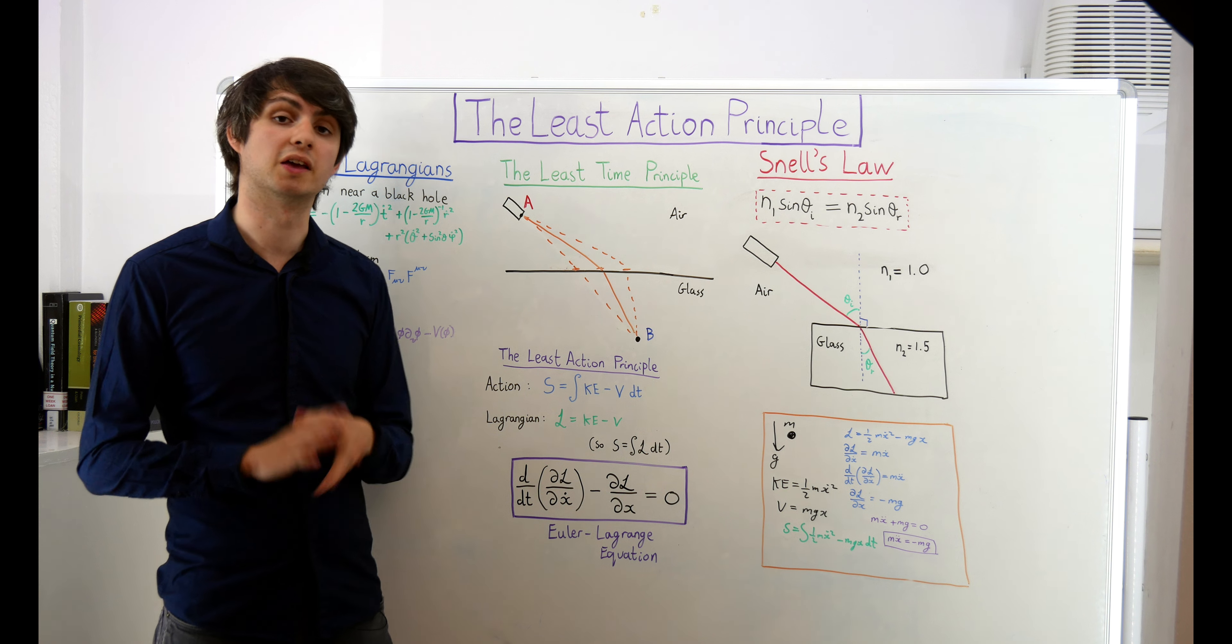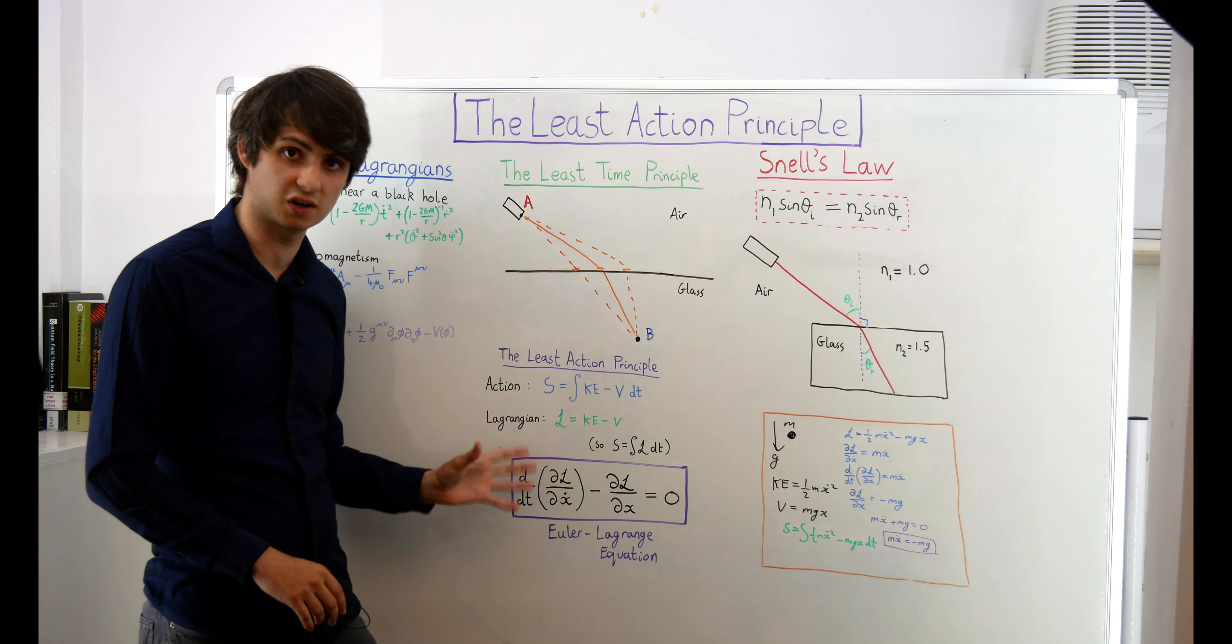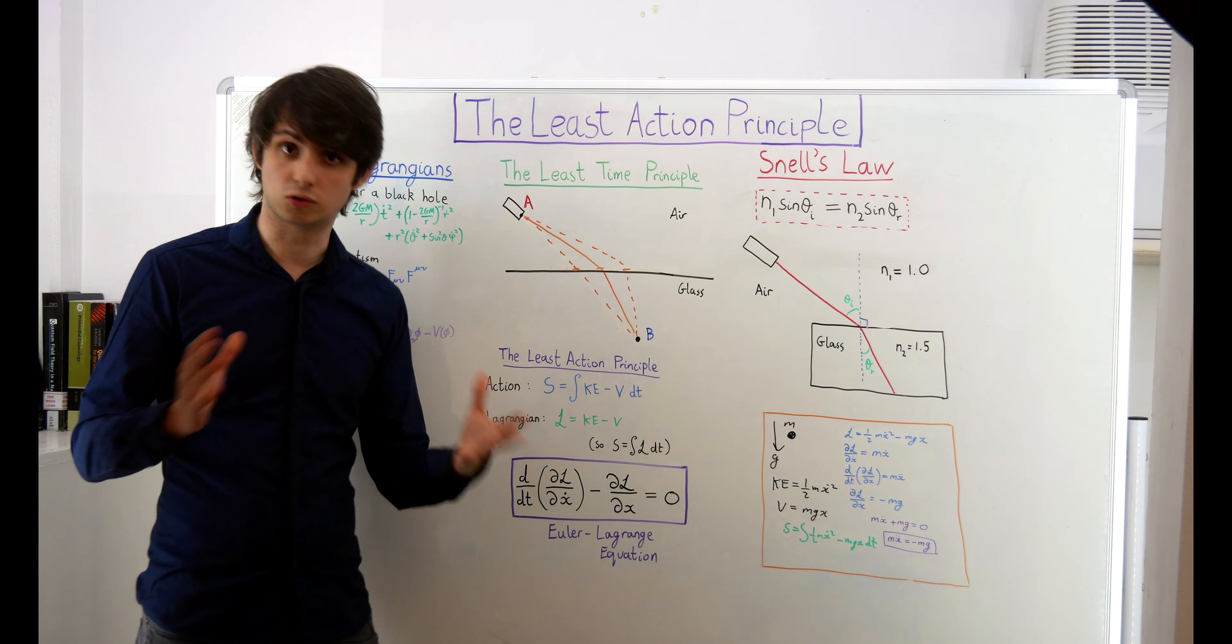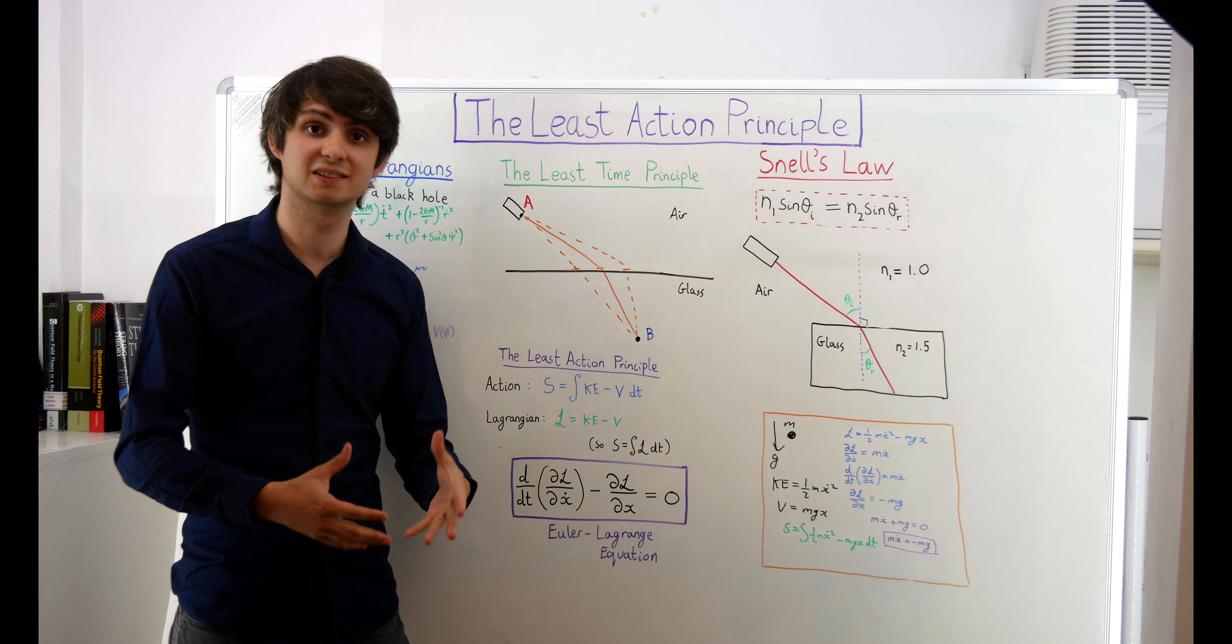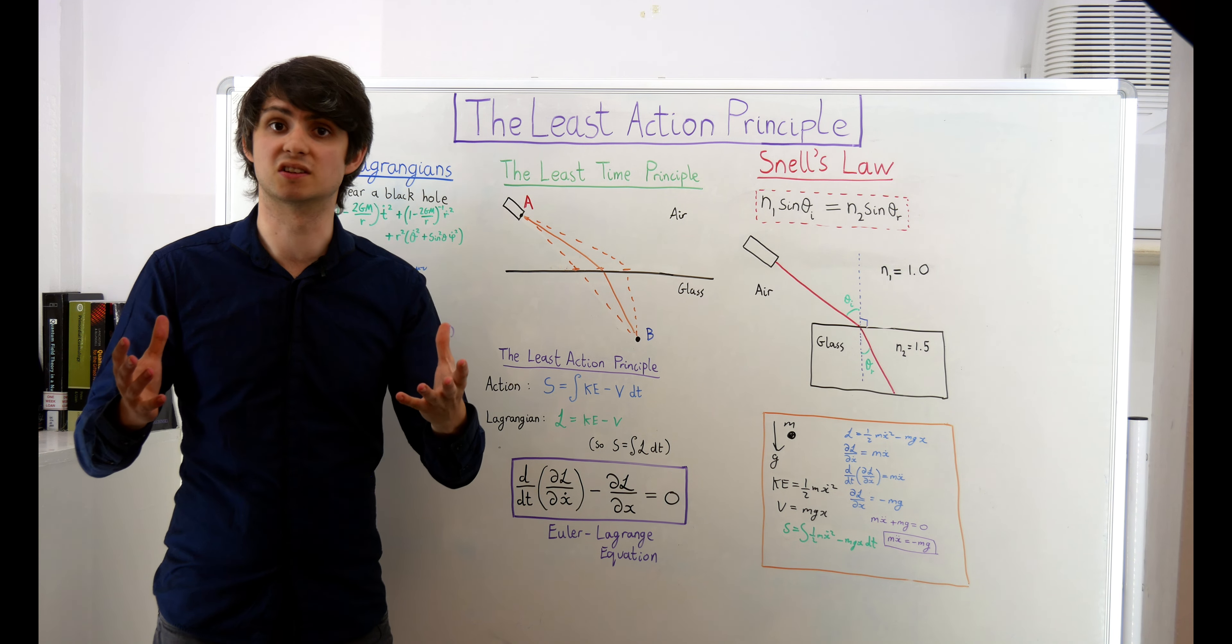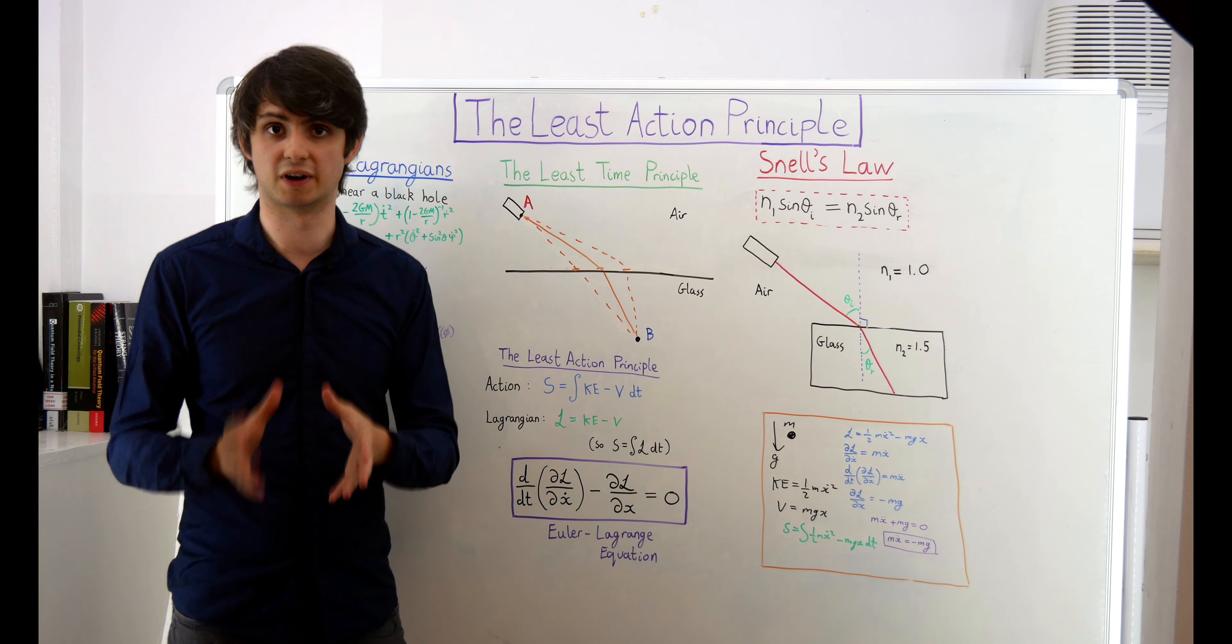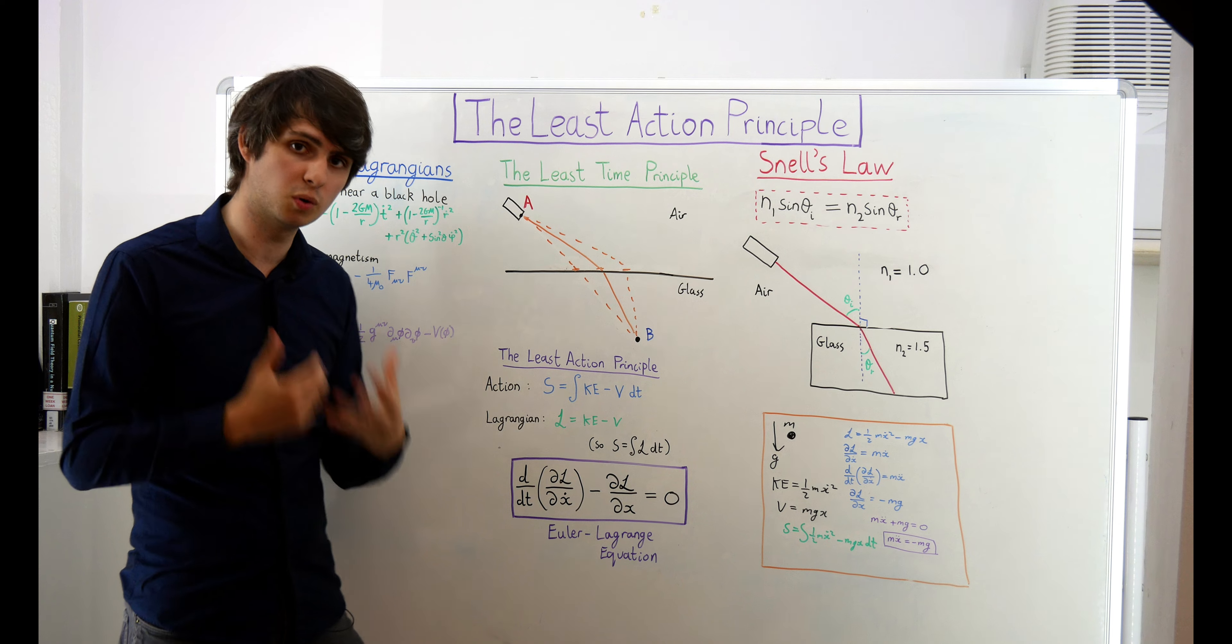It usually won't be until a university physics course when you'll see Lagrangian mechanics for the first time, and even then you're unlikely to be told the true importance of this framework. Lagrangian mechanics at university is usually taught as a reformulation of mechanics that will allow you to solve for the behavior of very complicated systems like pendular moving on carts in a much more simple way than applying Newton's laws directly. But this is not why Lagrangian mechanics is so important.